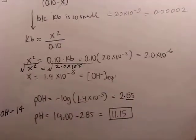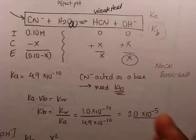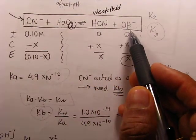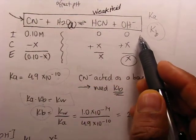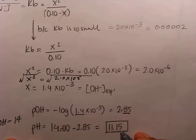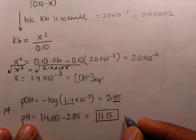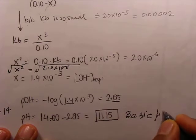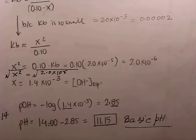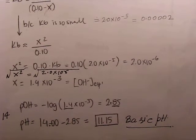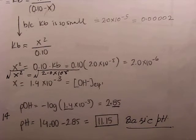As predicted earlier, the cyanide ion reacts with water to form a weak acid and increases hydroxyl ion concentration, making the solution basic. Our calculated pH of 11.15 confirms this is a basic solution. This was the example showing how to calculate the pH for a salt that produces a basic solution.